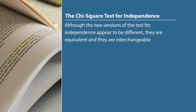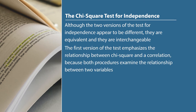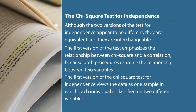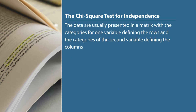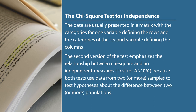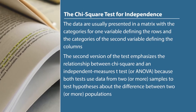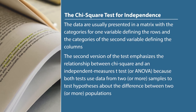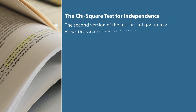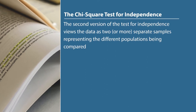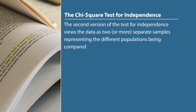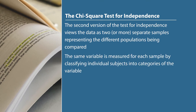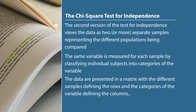Although the two versions of the test of independence appear different, they are equivalent and interchangeable. The first version emphasizes the relationship between Chi-square and correlation, as both examine the relationship between two variables; it views the data as one sample where each individual is classified on two different variables, presented in a matrix with categories of one variable as rows and categories of the second as columns. The second version emphasizes the relationship between Chi-square and an independent measures T-test or ANOVA, using data for two or more separate samples representing different populations being compared, with the same variable measured for each sample by classifying subjects into categories.